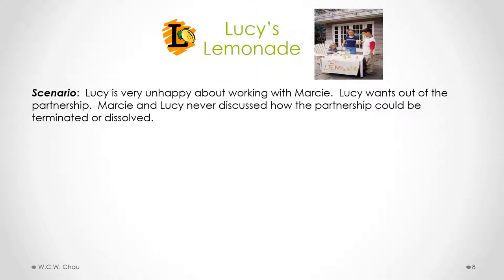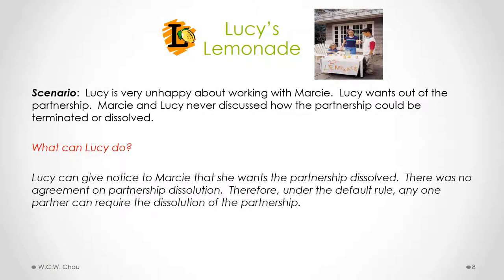Back at Lucy's Lemonade, Lucy is very unhappy working with Marcy and wants out of the partnership. Lucy and Marcy never discussed how the partnership could be terminated or dissolved. What can Lucy do? Lucy can give notice to Marcy that she wants the partnership dissolved. Since there was no agreement on dissolution, under the default rule in the Partnerships Act, any one partner can give notice to require dissolution.